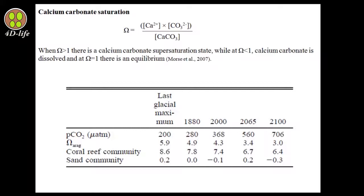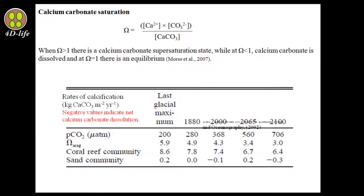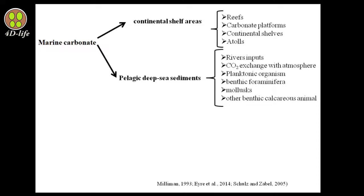These changes in the aragonite saturation state range can significantly reduce coral calcification in the future. Alkalinity and pH in seawater are adjusted by marine carbonate accumulation. The main sources of marine carbonate accumulation and production come from two important sources: continental shelf areas and pelagic deep sea sediments. Continental shelf areas include reefs, carbonate platforms, continental shelves, and atolls.